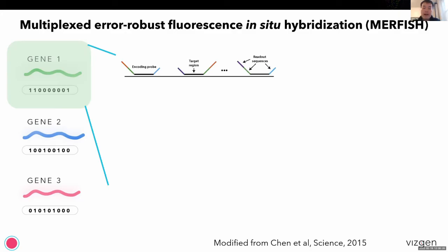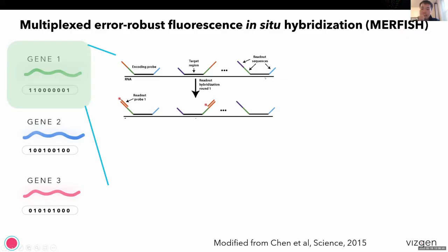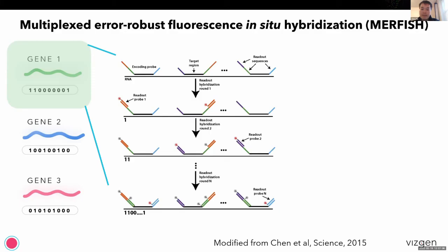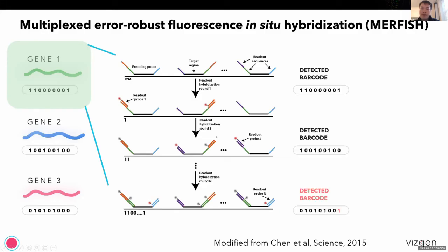We hybridize different RNA species with a set of oligoprobes. These probes have a target region that binds to the RNA species, but also have readout sequences that allow readout probes to bind. Once this first binding step is complete, we flow in readout probes in different rounds of imaging. In each round, if there is a binding event it decodes as one, and if there is no signal it decodes as zero. By repeating this cycle, we build up an optical barcode that is then matched with the pre-assigned error-robust binary barcode, which helps identify different RNA species in situ.